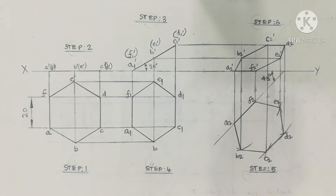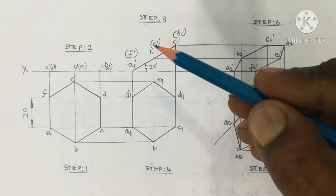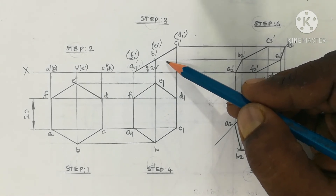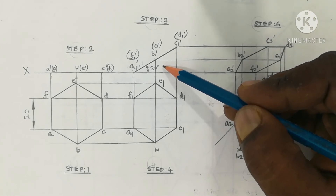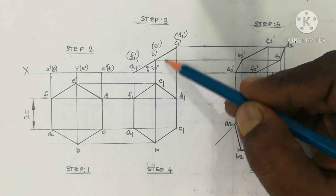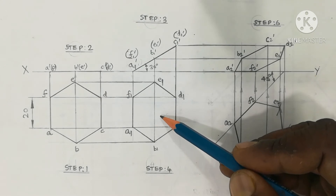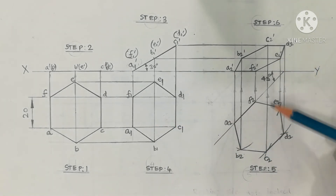The surface of the lamina is inclined at 30 degrees to the HP. The first step gives the simple top view and front view. Step 3 is about the surface of the hexagonal lamina inclined at 30 degrees to the HP, where the angle will appear above the hexagonal shape based on the straightening concept. That gives the corresponding top view — the surface inclination top view — followed by the final projections.